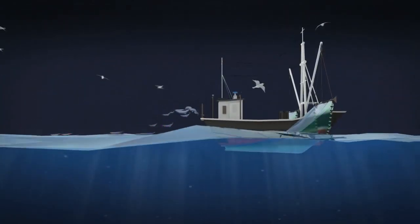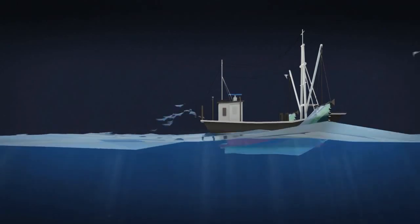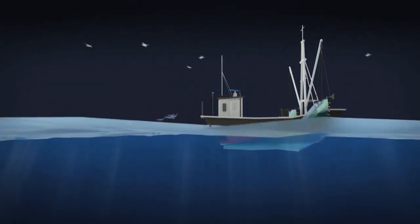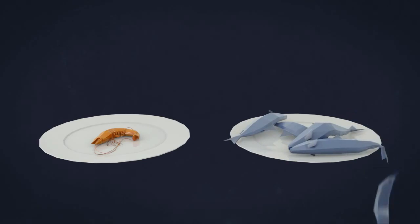Typically, shrimp trawlers throw 80 to 90 percent of the marine creatures caught back overboard. This means that for one kilo of shrimp, up to nine kilos of other marine wildlife is caught and wasted.